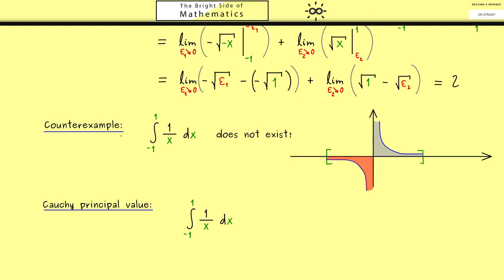So this construction can help for improper integrals that don't exist. And in order to distinguish it from a normal improper integral, I will put pv in front of the integral sign.